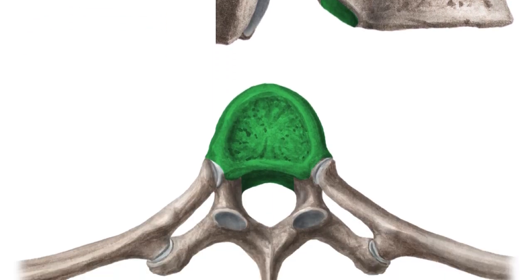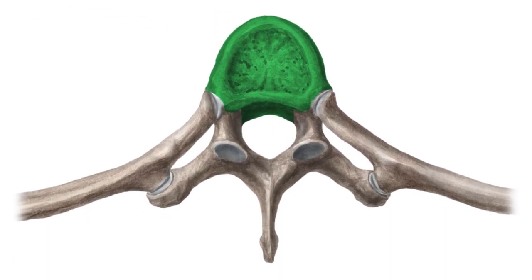In addition, the spinous processes are relatively more pointed than other vertebrae and angle sharply downward. The body of a thoracic vertebra, seen here highlighted in green, is somewhat heart-shaped.